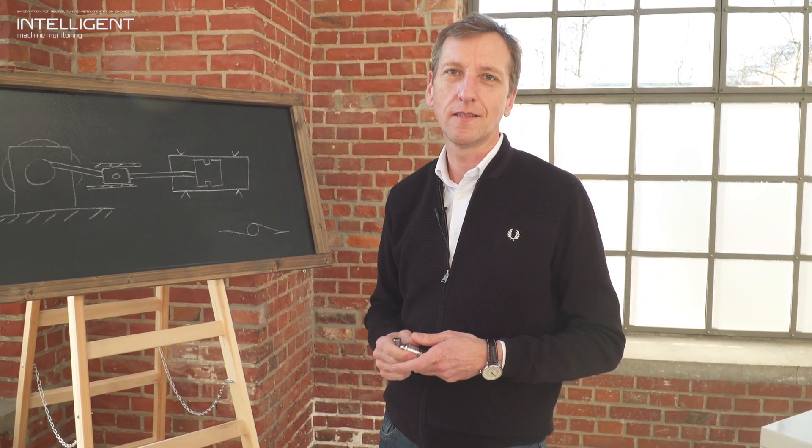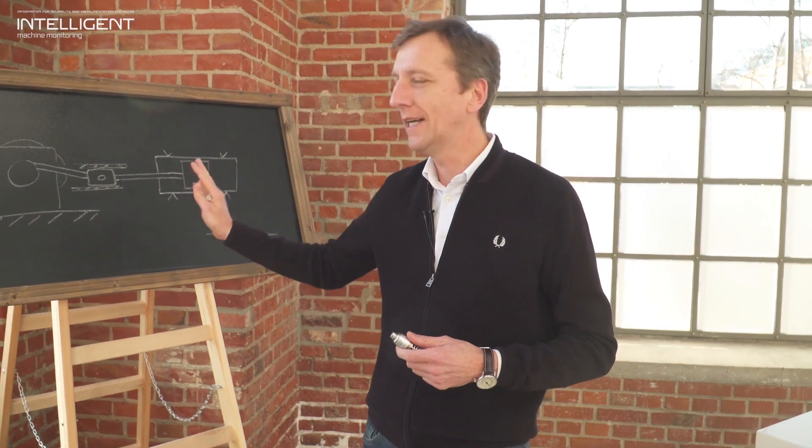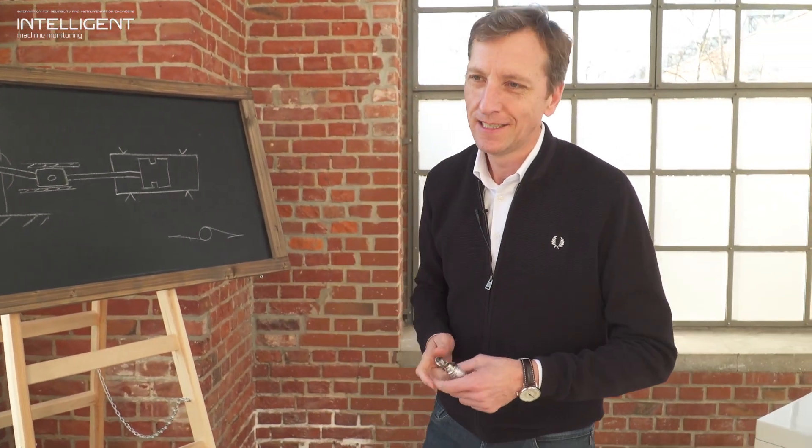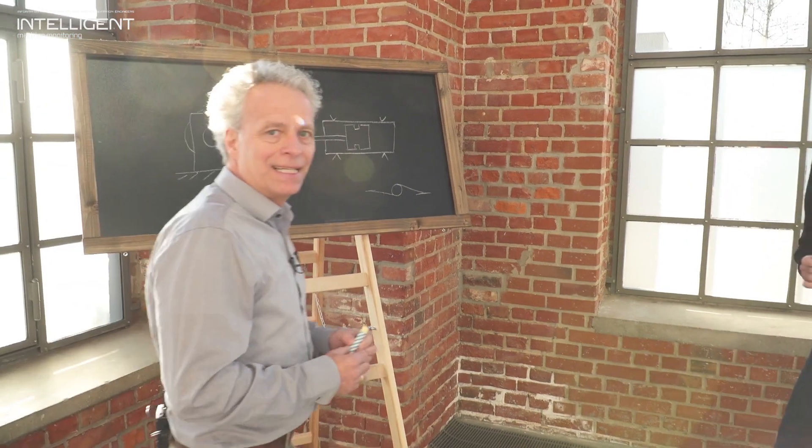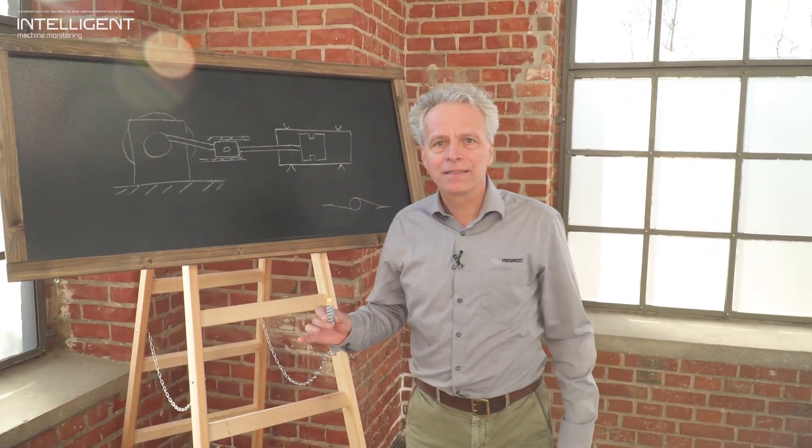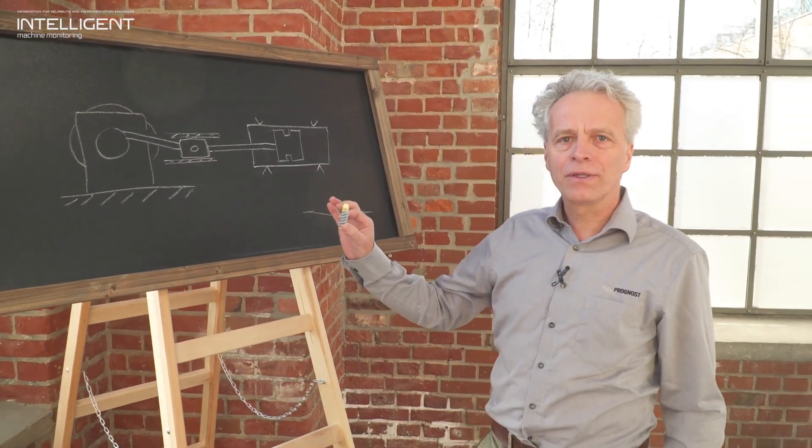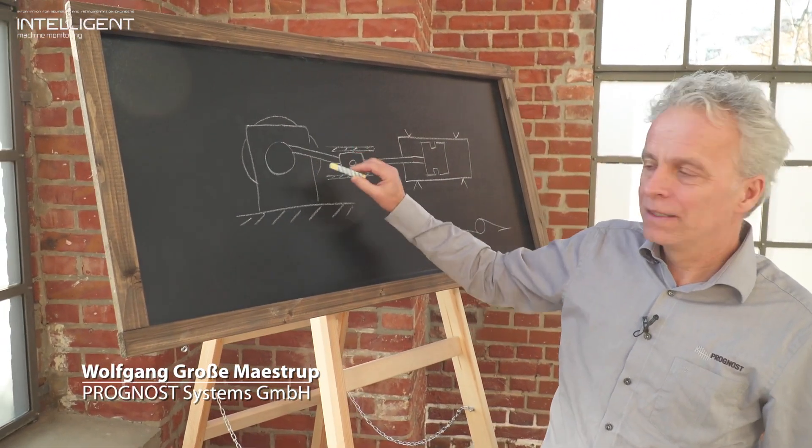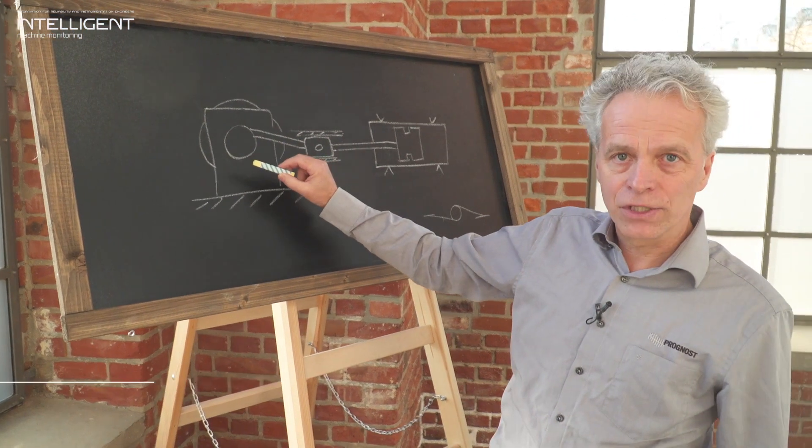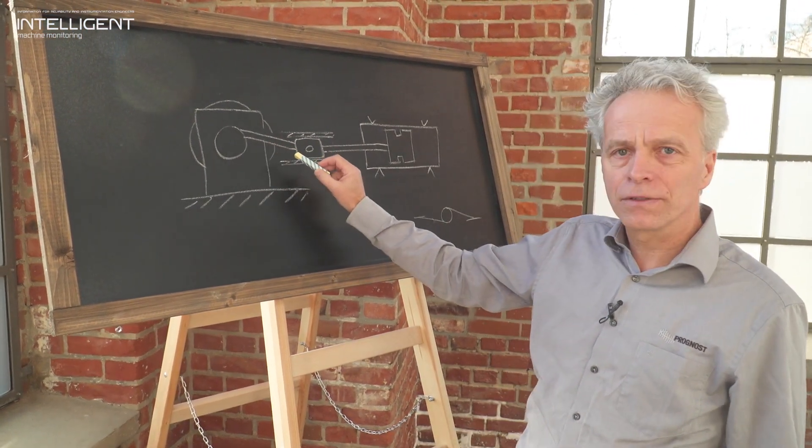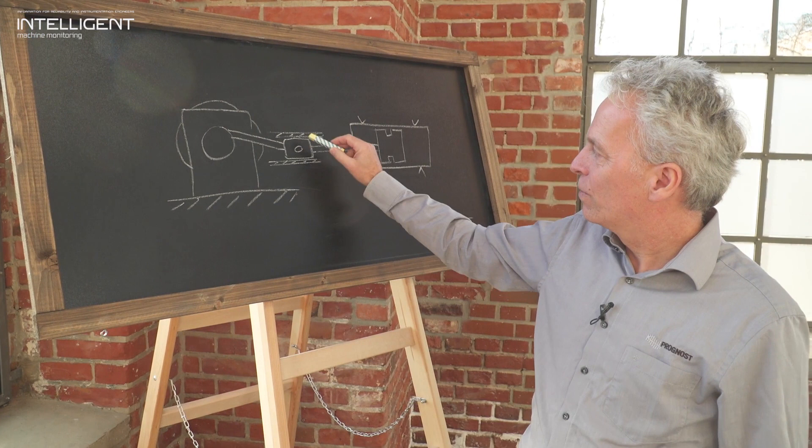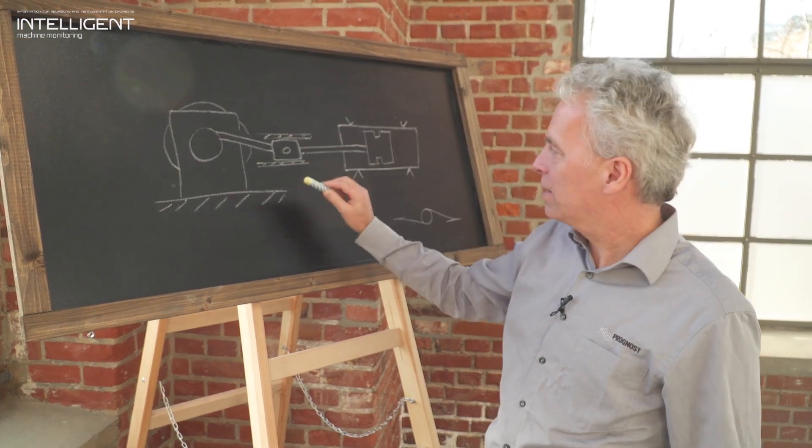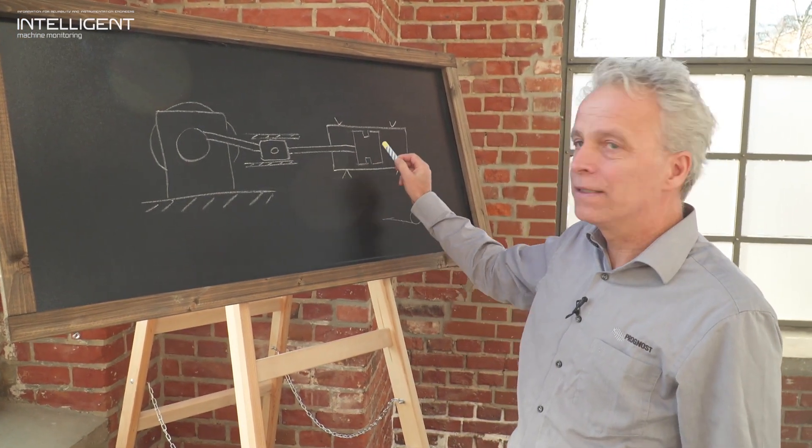What I have prepared here is a simplified cross-section drawing of a reciprocating compressor. We see here the flywheel, behind the crankcase, inside the crankcase the crankshaft that drives the connecting rod, here the crosshead which moves inside the crosshead guide, then the piston rod and the piston.